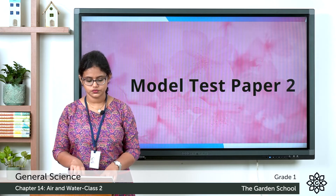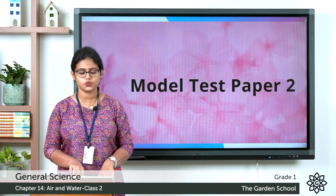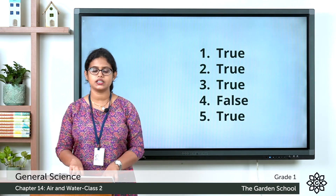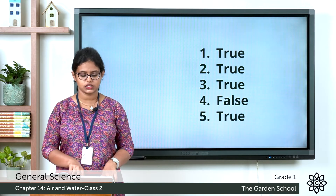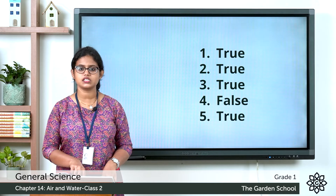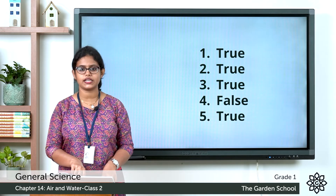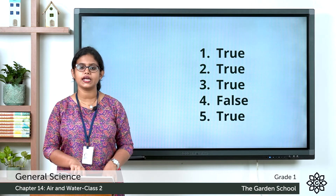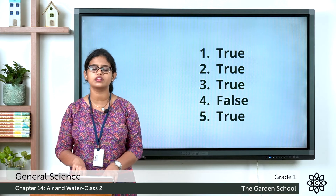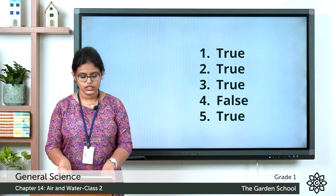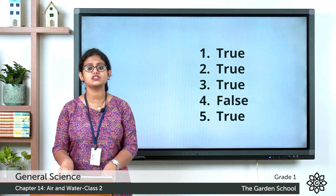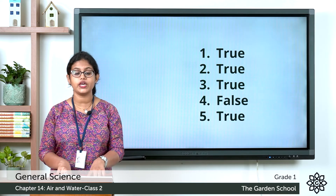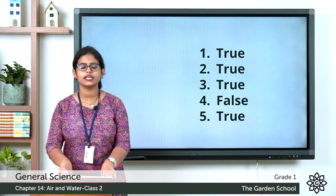Tick the true statements and cross the false ones. First: we see many stars at night — true. Second: we see the sun during the day — true. Third: all living things need air to live — true. Fourth: the sun is the biggest star — false; the sun is a star but it is not the biggest star. Fifth: the side of the earth that faces the sun has day — true.